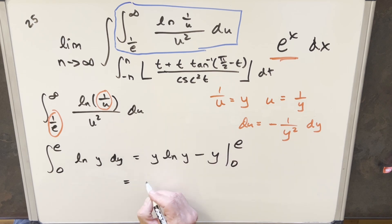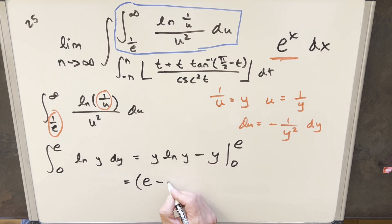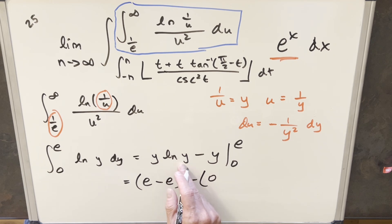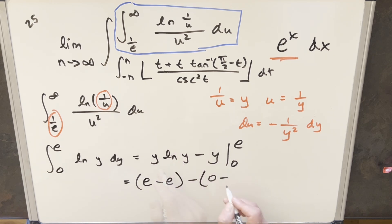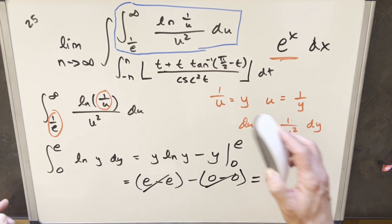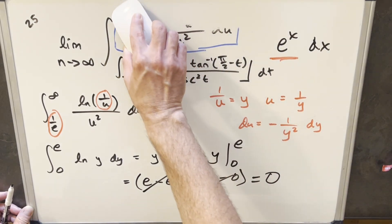Plugging in e: e·ln(e) − e = e·1 − e = 0. For the lower bound at 0: 0·ln(0) − 0. Even though ln approaches −∞, the limit of y·ln(y) as y→0 is still 0. So the lower bound also gives 0. The whole result is just 0. We update the upper bound of the next integral to 0.